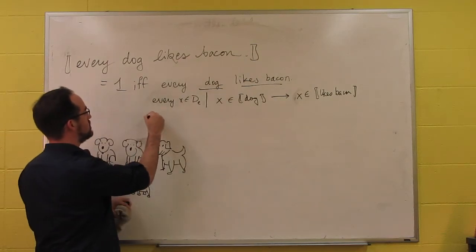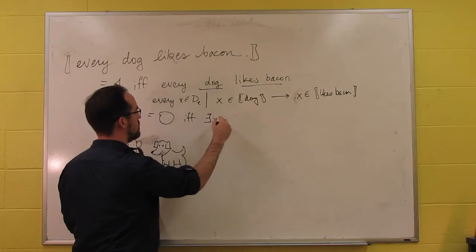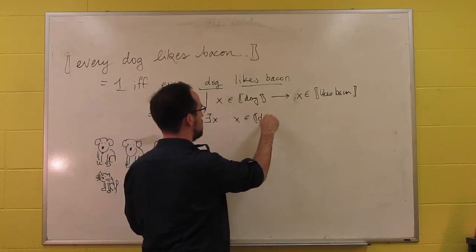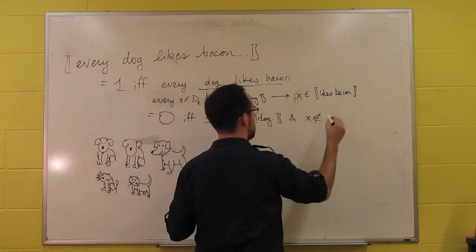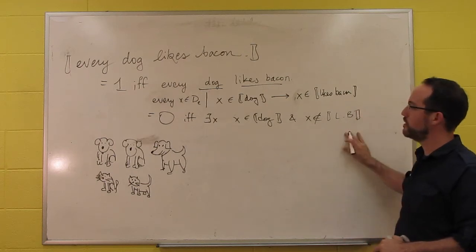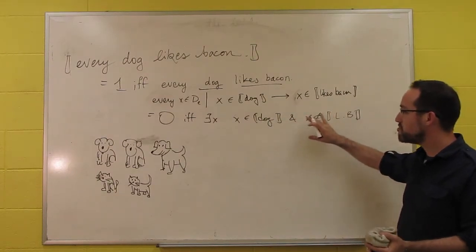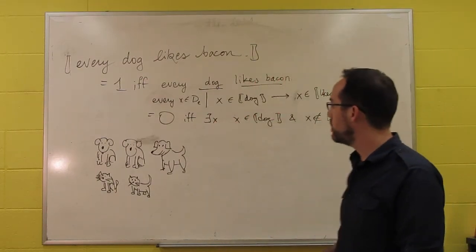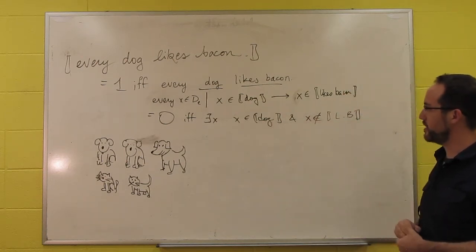That would be the truth condition for every dog likes bacon. It's zero if and only if there is an individual that is a dog and does not like bacon. It's true if we're talking about cats that don't like bacon, that's fine. But it's only false if there's a dog that doesn't. This is the truth condition we want.